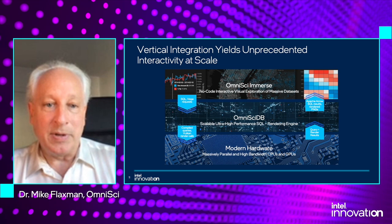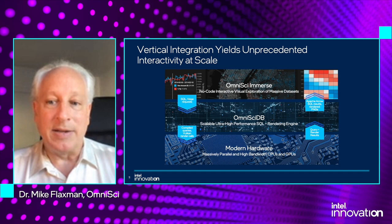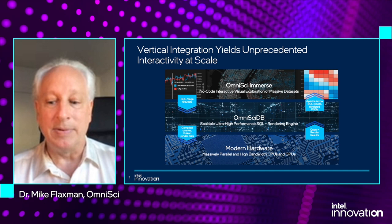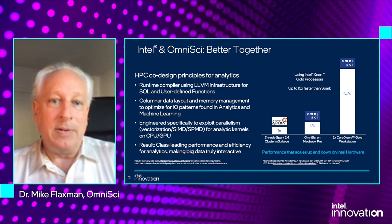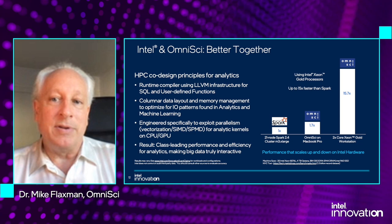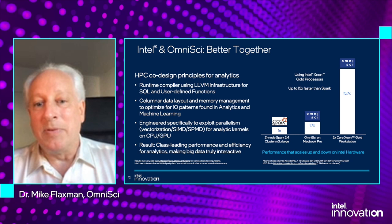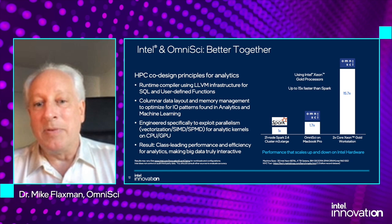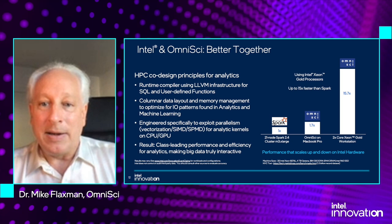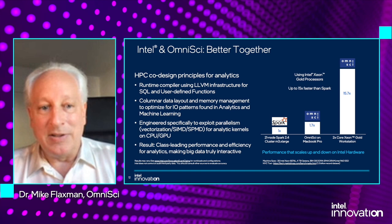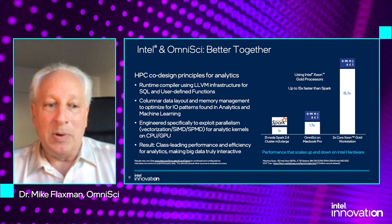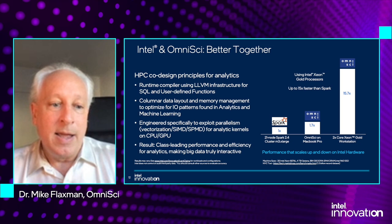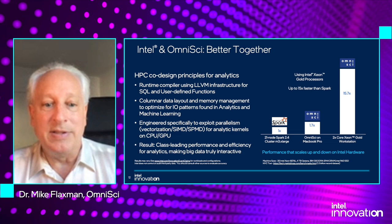At the top level, we've built a no-code interactive visual exploration tool called OmniSci Immerse, which lets you access very large datasets interactively rendered from a normal web browser. In our partnership with Intel, we've been working on a variety of technologies, and the punchline is — as shown in the chart on the right — we're able to scale on a single machine to much better performance than, for instance, a 21-node Spark cluster. We use runtime compilation, take advantage of being a columnar database, and engineer specifically to exploit parallelism — vectorization, for instance — on both CPU and GPU. The result is class-leading performance and efficiency, making big data interactive.